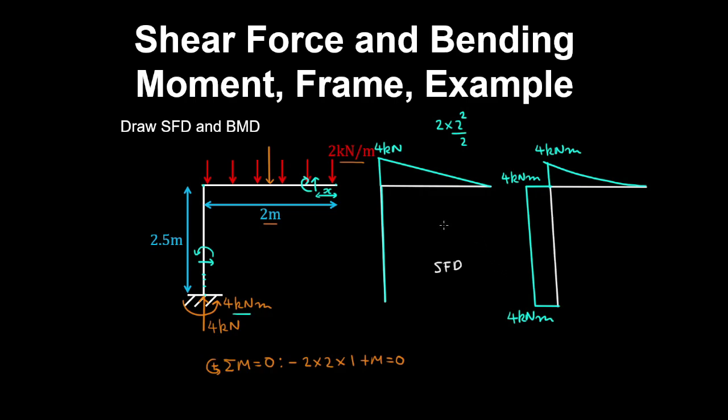Remember that the derivative of the bending moment is the shear force. The bending moment diagram is constant on the column, so the shear force is 0. The bending moment diagram is parabolic on the beam, so the shear force is linear.